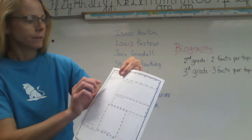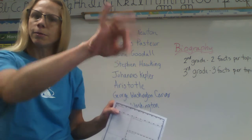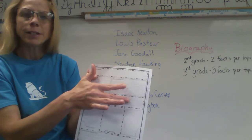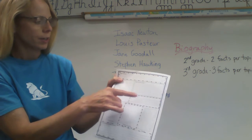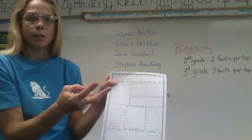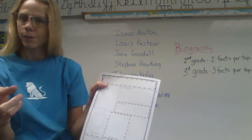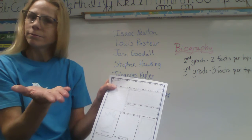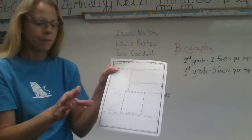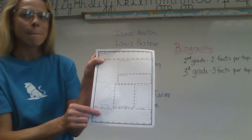Your first paragraph is going to be early life, so the facts you put down here you'll put into sentences on your written paper. Your second paragraph, your main paragraph, is going to have these two topics: why is he or she famous and interesting facts. For second graders, that paragraph would have at least four sentences — two from here and two from here. Third graders, at least six sentences. Then in your final paragraph, your third paragraph, you would put your facts from this topic into your sentences.